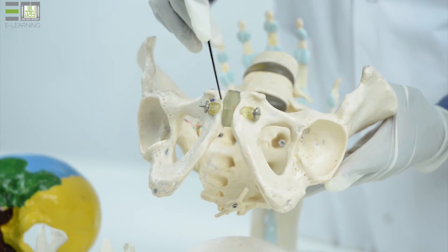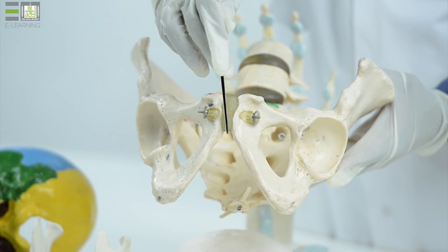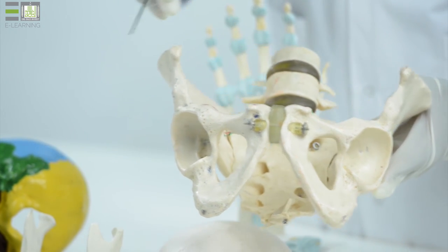Also, between the two pubic bones of our hip bone, the symphysis pubis is an example of secondary cartilaginous joint.